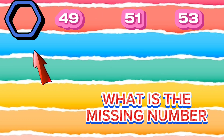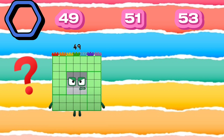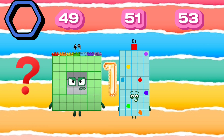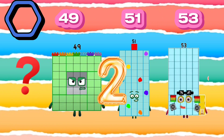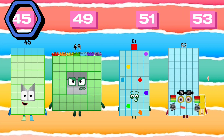What is the missing number? 49, 51, 53. The missing number is 45. The number sequence is 45, 49, 51, 53.